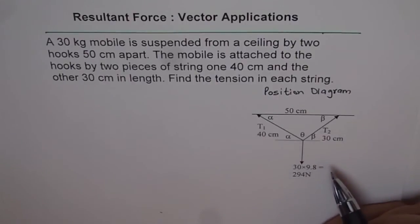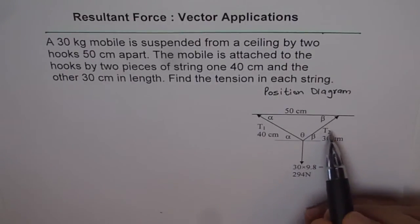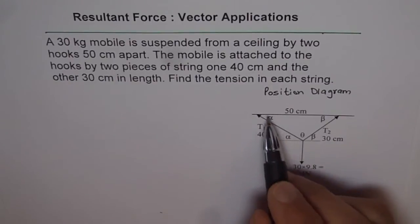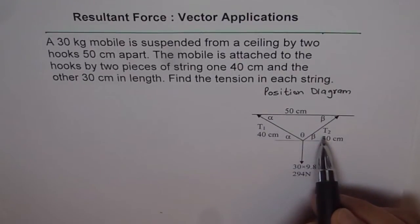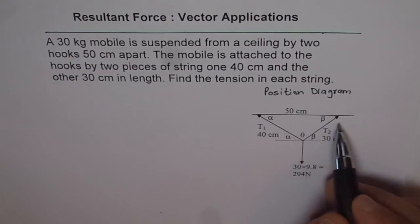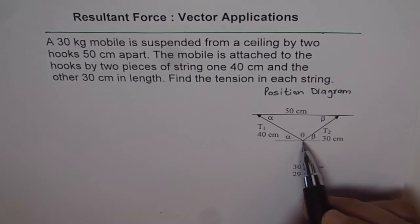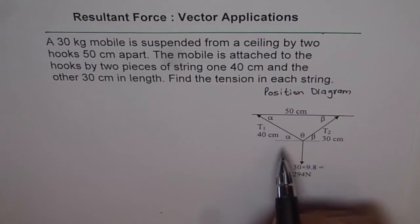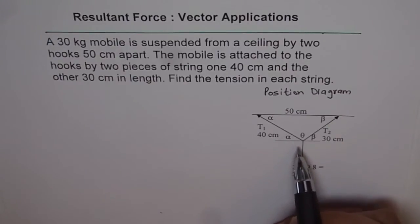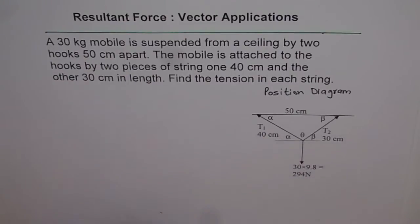There is a triangle here whose three sides are known to us. Let these angles be alpha, beta and theta. Using the three sides in a triangle, we can use cosine law and find the angles. As a first part, let's first find the angles alpha, beta and theta. The sides are like 3, 4 and 5, so it could be a right triangle.